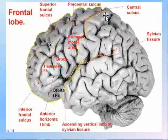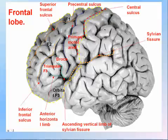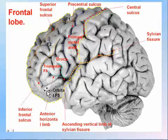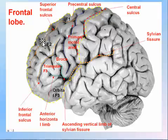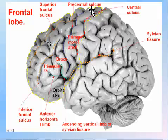Posteriorly the frontal lobe is limited by the central sulcus. Anteriorly there is a superior frontal sulcus and gyrus, while medially the two cingulate gyri contact each other. The frontal lobe contains the primary motor area and Broca's area. As long as there is a central sulcus, in front of it will be the frontal lobe and behind it the parietal lobe.